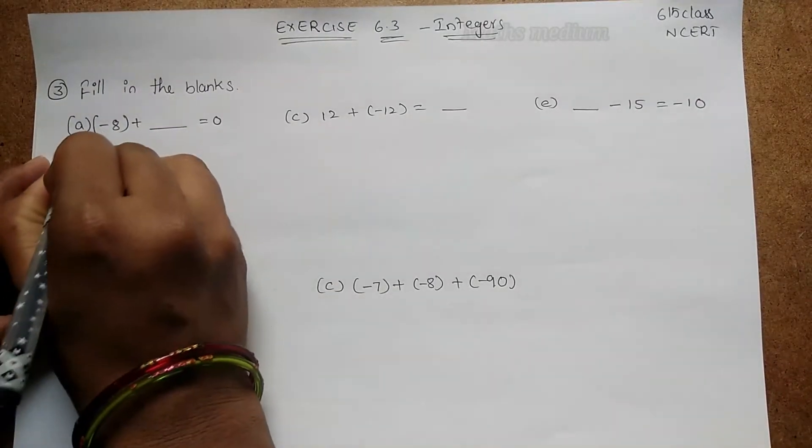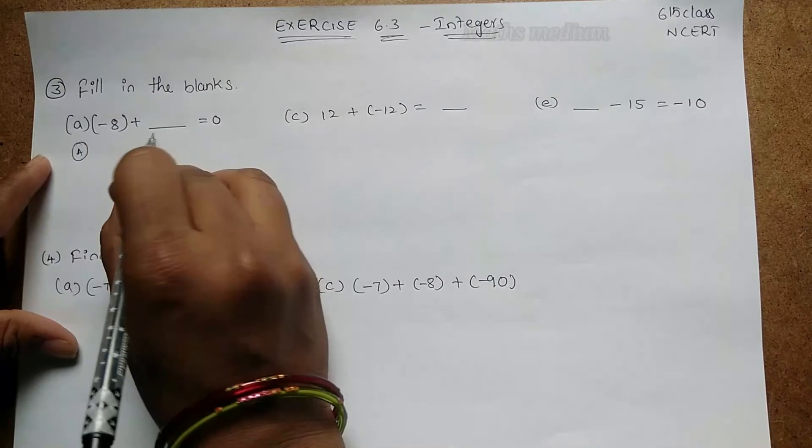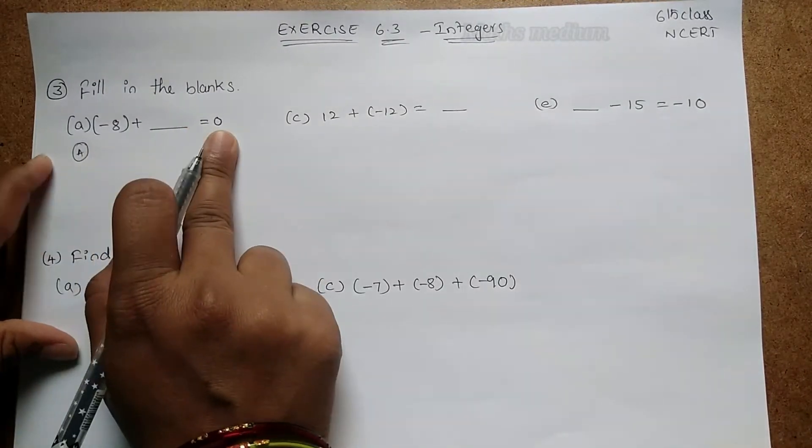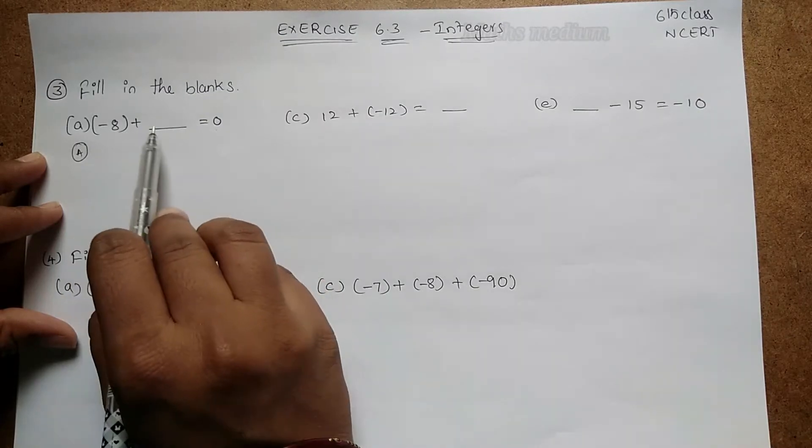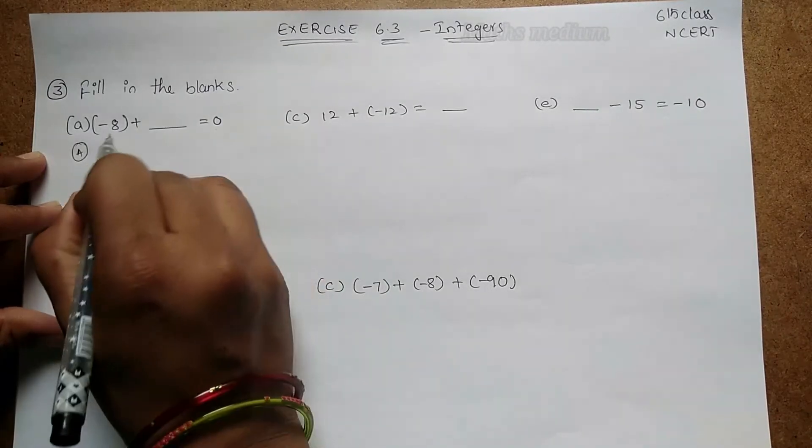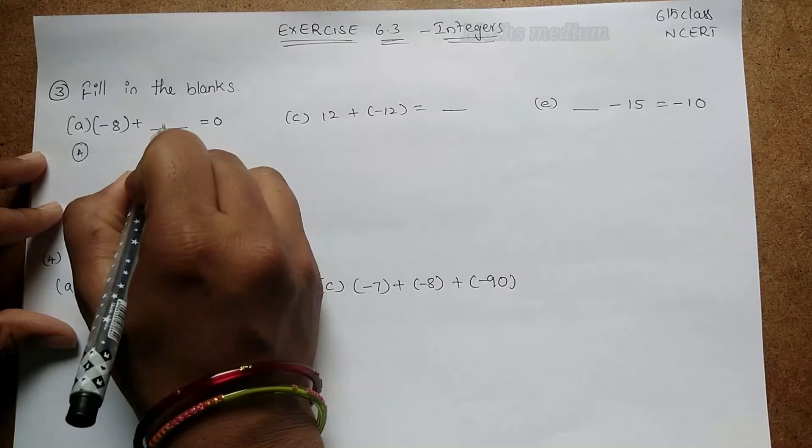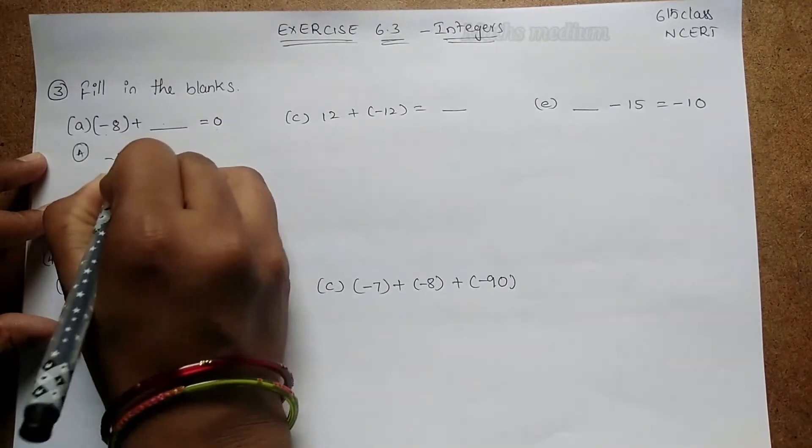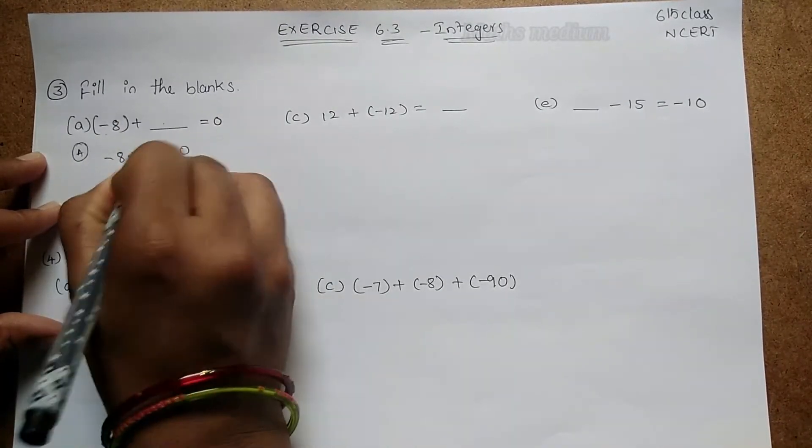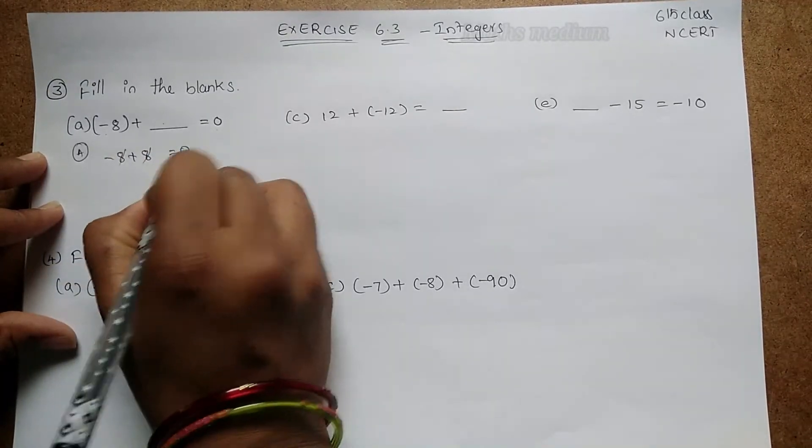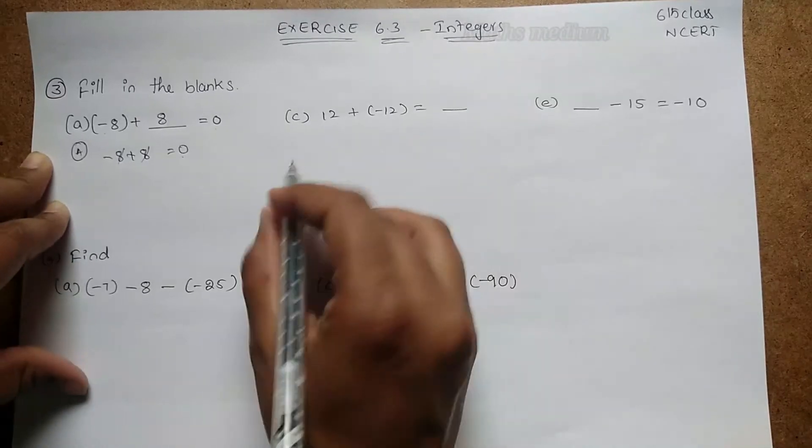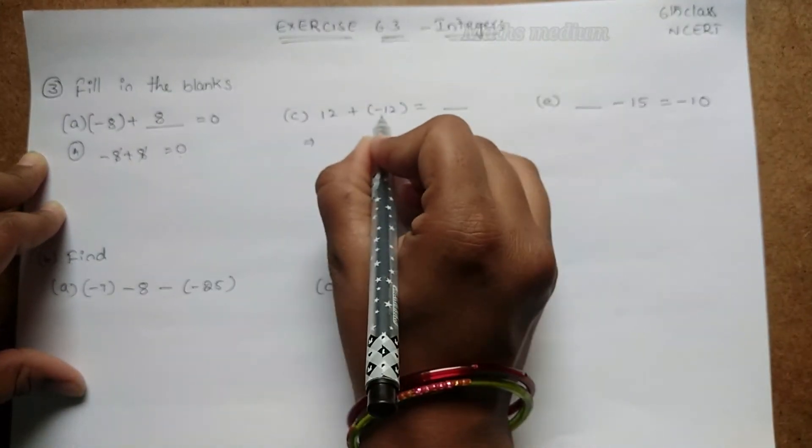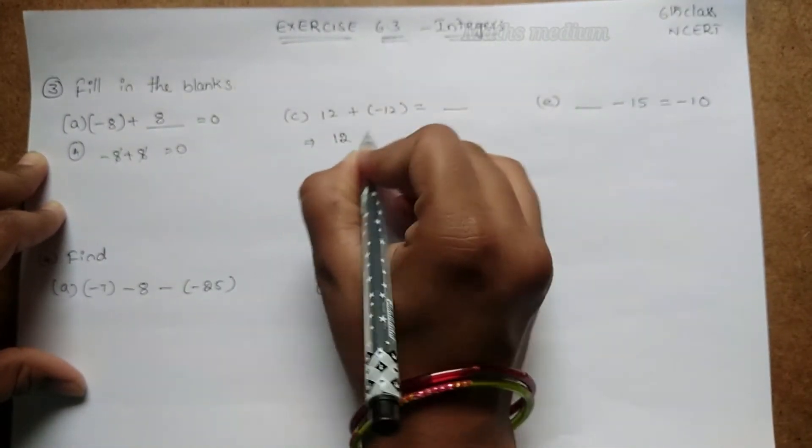If you take -8 + ___ = 0, if you have 0 as an answer, then we have to add or subtract with the same number. So here is -8, so we have to add +8 here. So -8 + 8 = 0 because these two get cancelled. The answer is 8.